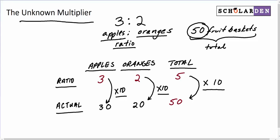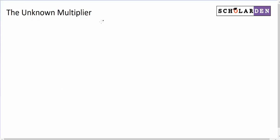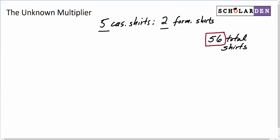Let's look at another example. Let's say in a particular store there were 5 casual shirts for every 2 formal shirts. So that's a ratio of 5 to 2. And there were 56 total shirts of both kinds. So this is the same situation we had before where we knew a part-to-part ratio, but we don't know the actual numbers of the parts. And then we know the total actual number, in this case, 56.